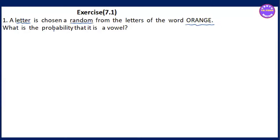What is the probability of a vowel? The vowel is A, E, I, O, U.